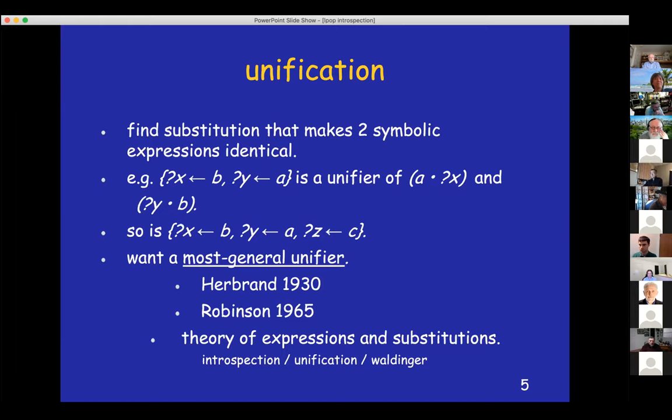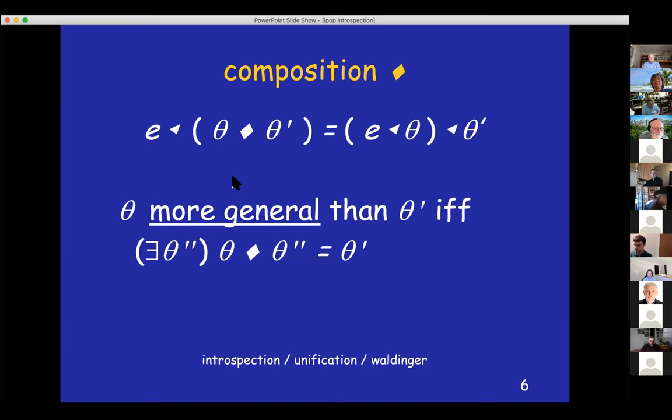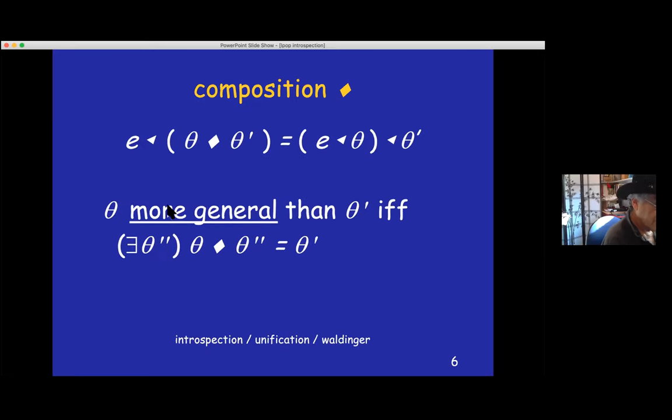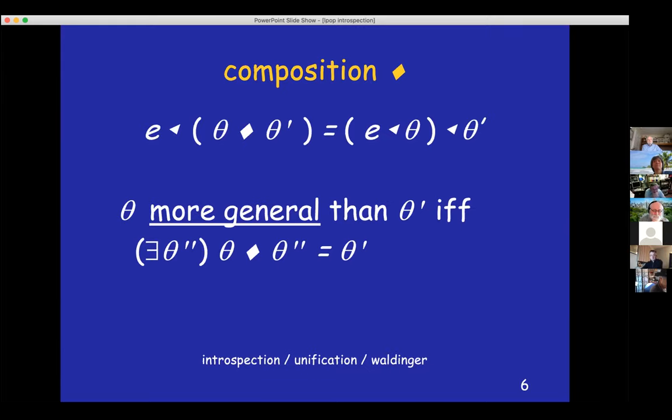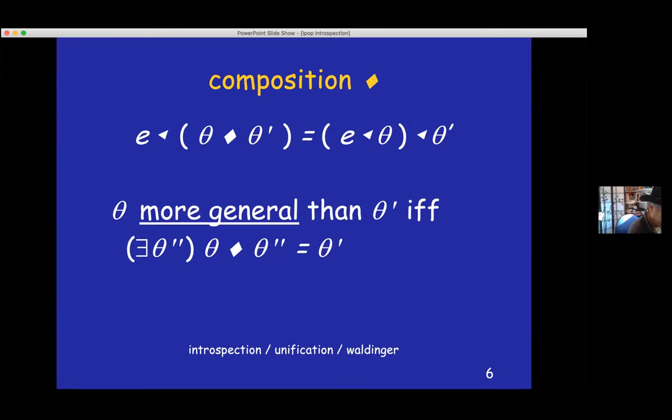So to do the derivation, we need a theory of expressions and substitutions. A fundamental operation in the theory of substitutions is the composition function. The composition of two substitutions is a substitution that has the effect of doing first the first substitution and then applying the second substitution to the result. And we use composition to describe the more general relation, which is important for unification. A substitution is more general than a second substitution if you can get from the first substitution to the second substitution by composing it with some third substitution, the so-called bridge substitution, which is not unique either.